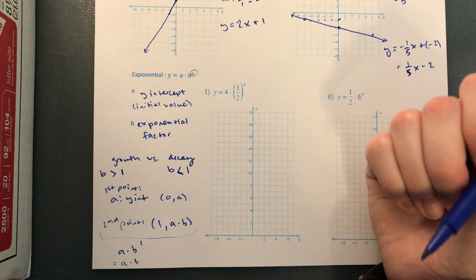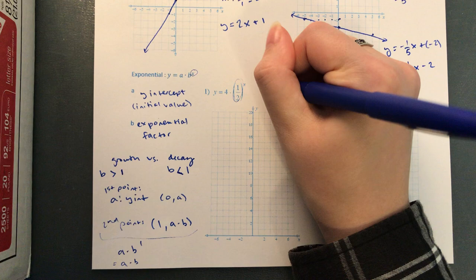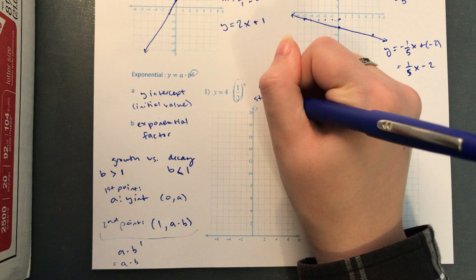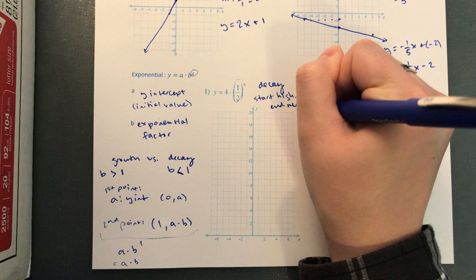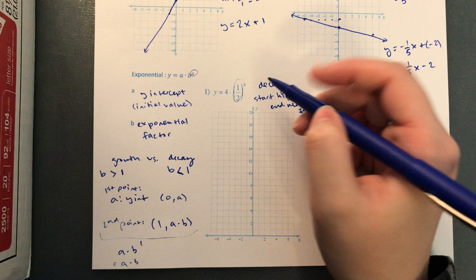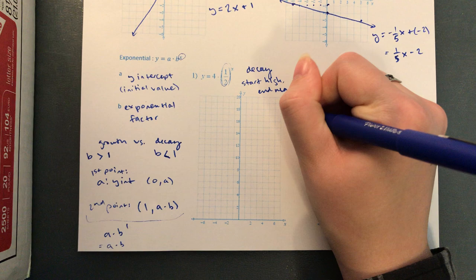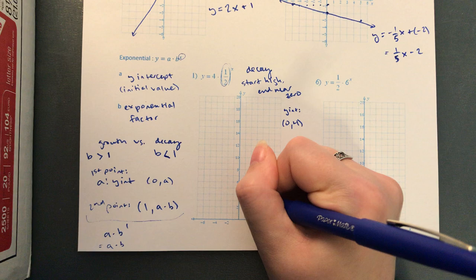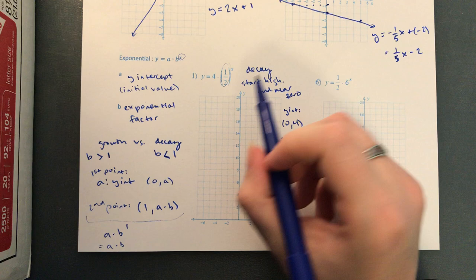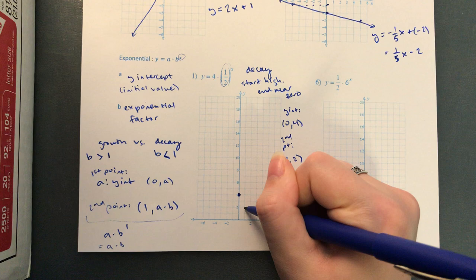For this first example, let's figure out if it's growth or decay — look at your b value. Your b value is less than one, so this is a decay graph. That means you start high and end near zero. Remember, you don't ever cross zero — it just gets really close. The points we'll plot: your y-intercept is (0, 4) because it's your a value. Your second point is (1, a times b) — 4 times one-half is 2 — so it's (1, 2).